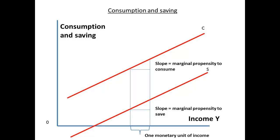The slope of these lines is important. The slope represents the increase per monetary unit of income — dollars, pounds, euros, or whatever is being used. The slope for consumption is called the marginal propensity to consume: it is the extra consumption that occurs for each individual monetary unit of income. The slope for saving is called the marginal propensity to save: it is the extra saving that will result from each additional monetary unit of income.